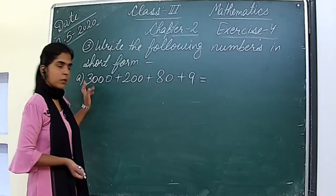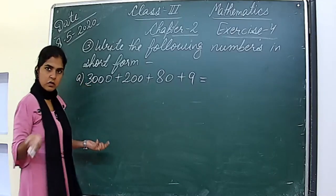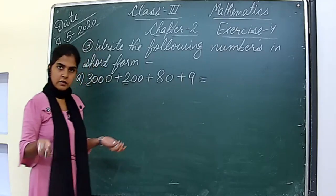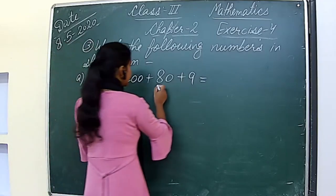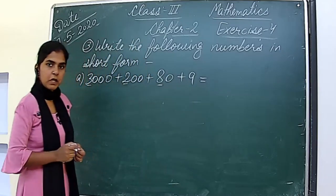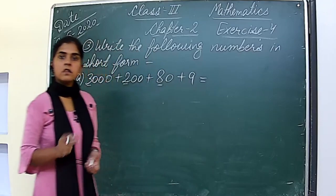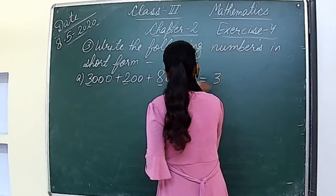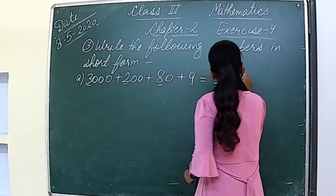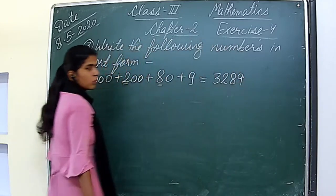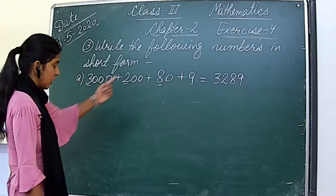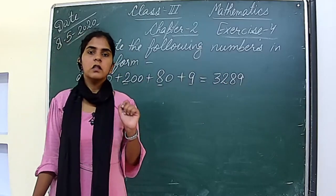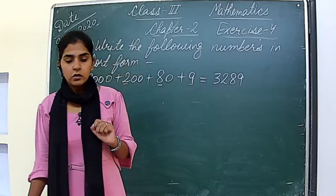The first part is 3000 plus 200 plus 80 plus 9. This is the expanded form and we need to write the short form. The digit at 1000 place is 3. The digit at 100 place is 2 — because there is 200. There is 80, so digit at 10's place is 8. And 9 is the digit at 1's place. So the number is 3289.